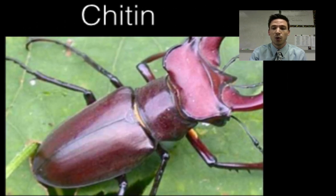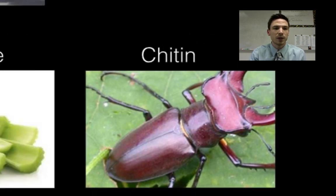Also some animals, so crustaceans or this insect here, they'll use a carbohydrate called chitin, C-H-I-T-I-N, to make their exoskeletons, so in addition to energy, carbohydrates can also be used for structural purposes for the organism.